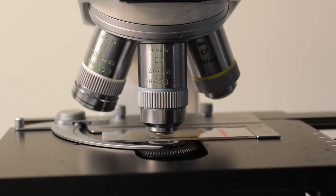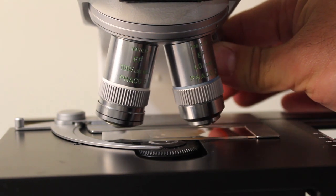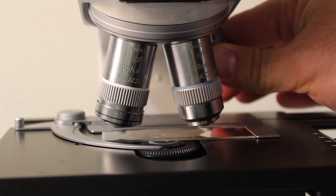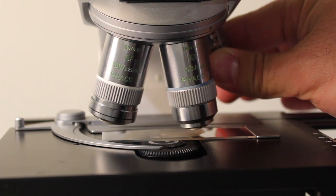Now, one thing that is important is whenever you're switching between air lenses, so that is lenses that image the sample with nothing between the lens and the sample itself, you want to be very careful not to rotate in an oil or a water objective lens because if you do this incorrectly, you could damage your most expensive lens on your microscope.